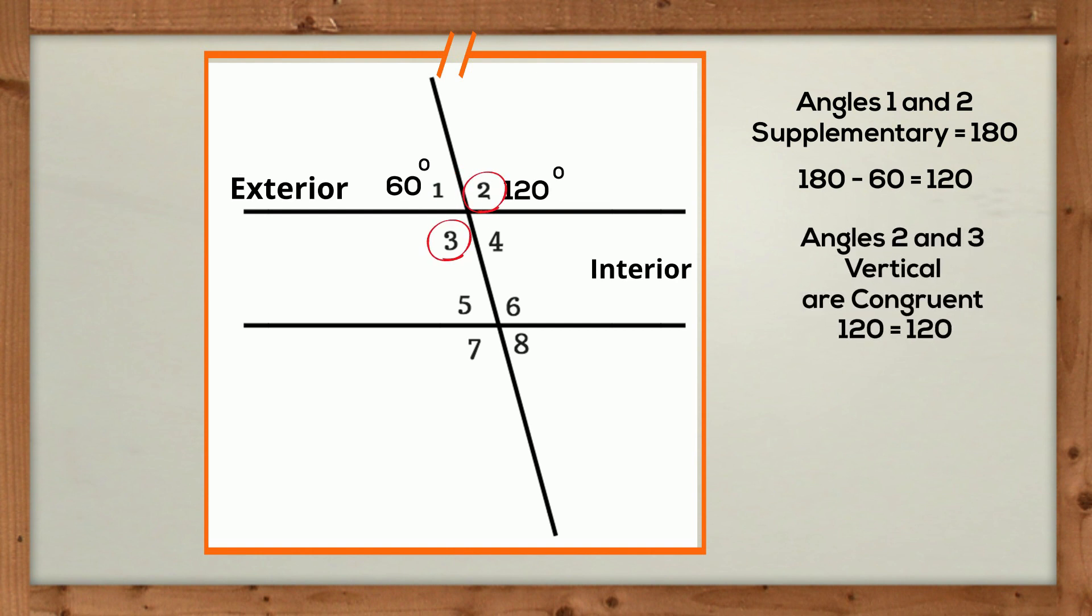Angles 2 and 3 are vertical, so they are congruent, and angle 3 will be 120. Then angles 3 and 4 are supplementary, so 180 minus 120 equals 60.